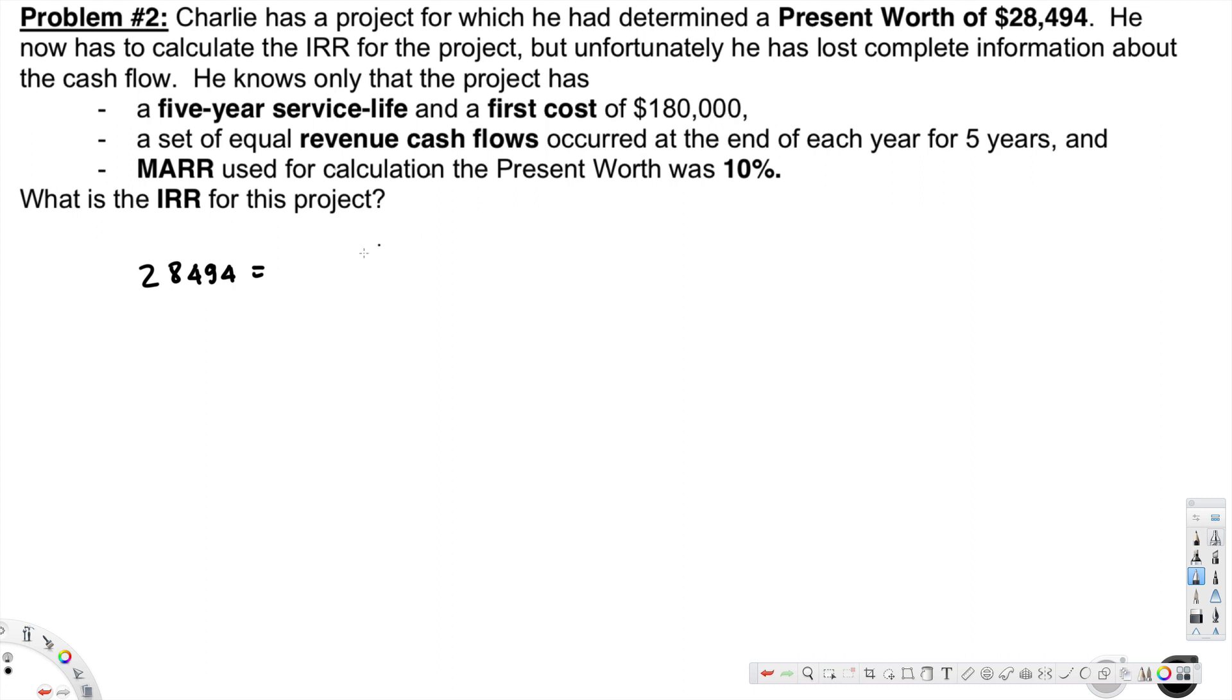Plus X times (P/A) - the interest rate is 10 percent and it's for five years service life, so (P/A,10%,5). Now if we solve for X from this equation, you will get 55,000.